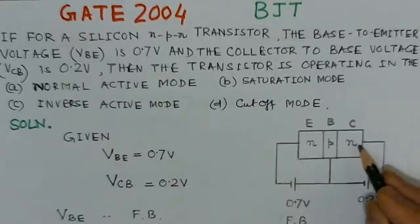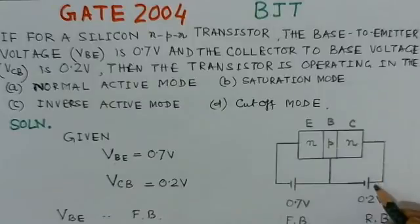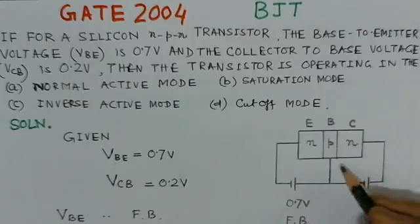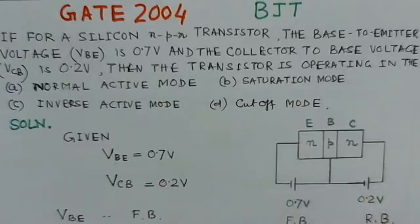this, to the N terminal, we are applying a positive supply. So this is, and to P, we are applying negative supply. So it is a reverse bias case.